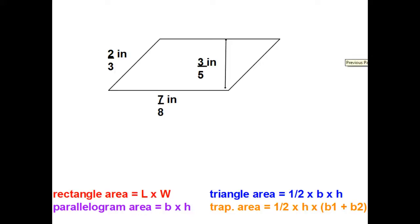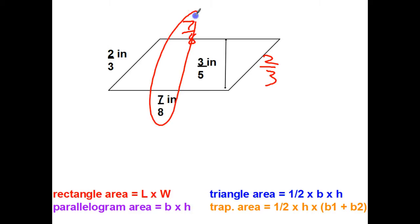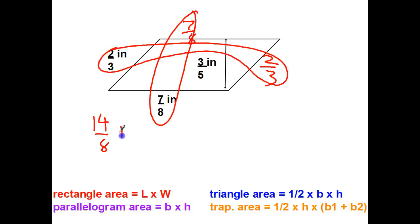In this particular one, I'm trying to find the area and perimeter of a parallelogram. The first thing I need to do is get my sides labeled. I have seven-eighths and two-thirds, so seven-eighths plus seven-eighths gives me fourteen-eighths, and two-thirds plus two-thirds gives me four-thirds.